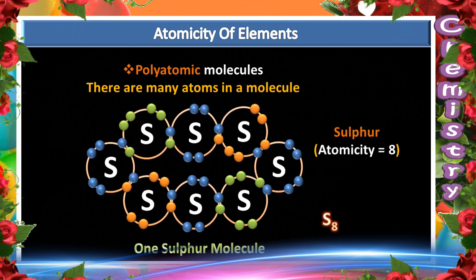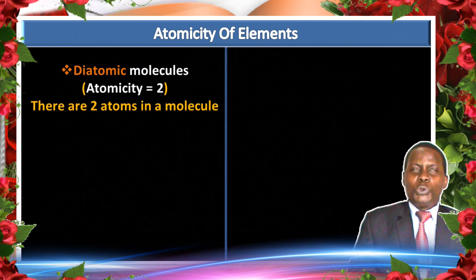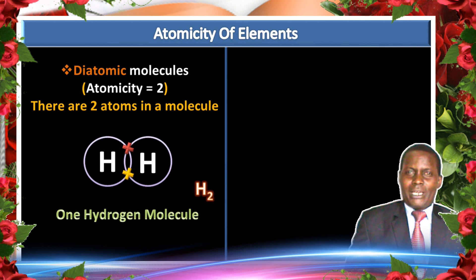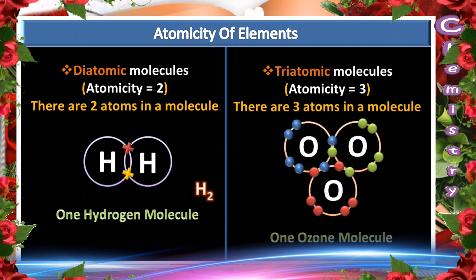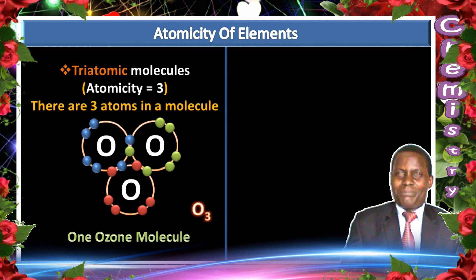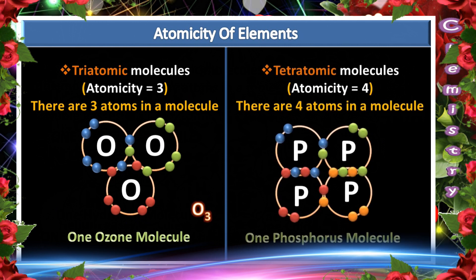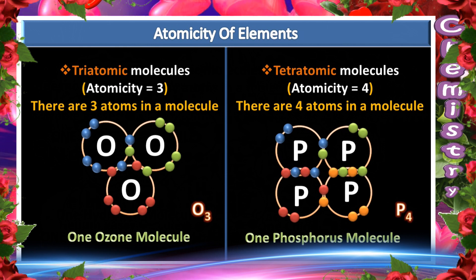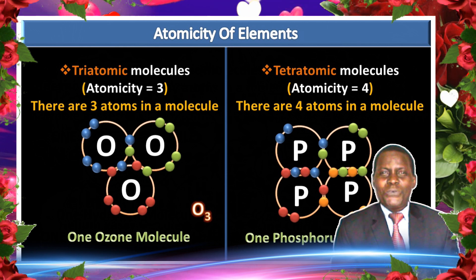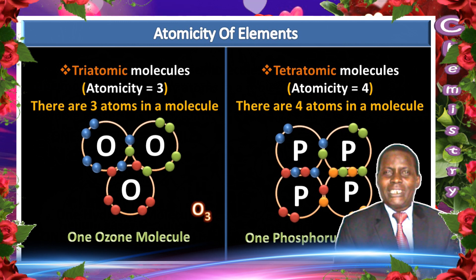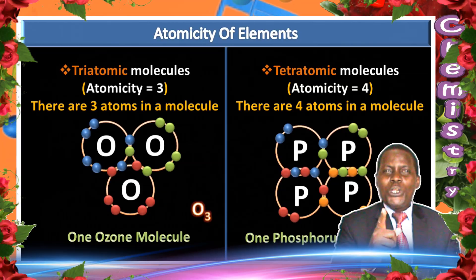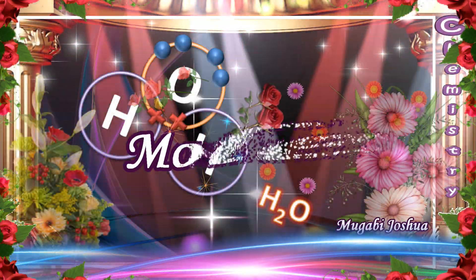To summarize: molecules of hydrogen are diatomic, molecules of ozone are triatomic, and molecules of phosphorus are tetraatomic. That is all about molecules. Thank you for staying with us — continue to be with us as we simplify chemistry. God bless you.